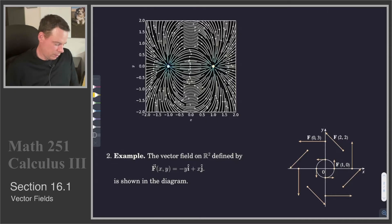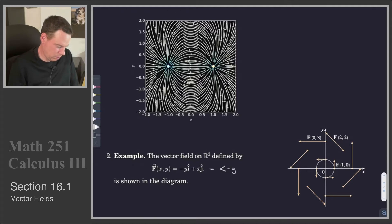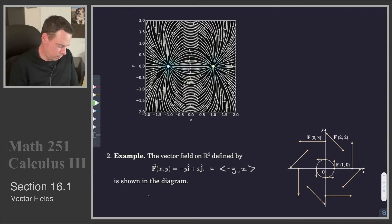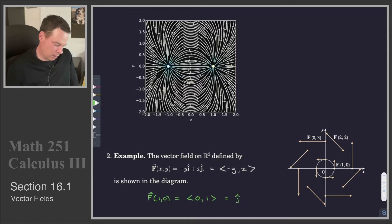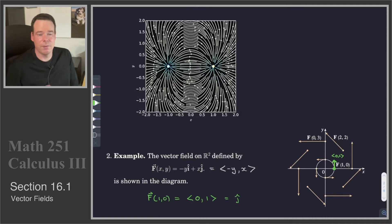Here's a concrete example. The vector field on R2 is defined by the function F, which takes (x, y) and returns the vector negative y î plus x ĵ, or in angle bracket notation, ⟨-y, x⟩. For example, the vector attached to the point (1, 0) — where x=1 and y=0 — is ⟨0, 1⟩, which is the vector ĵ. We can do that for every point in space; here we've plotted enough to get a feel for what this vector field looks like.